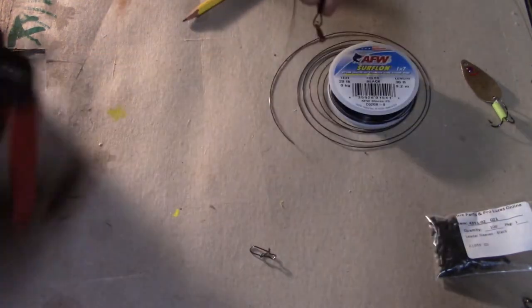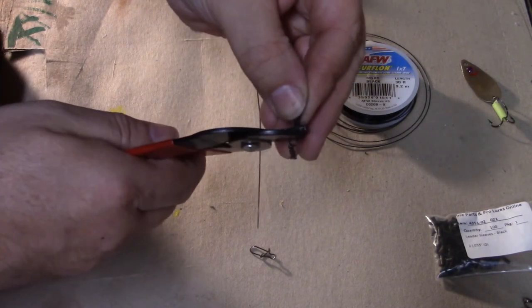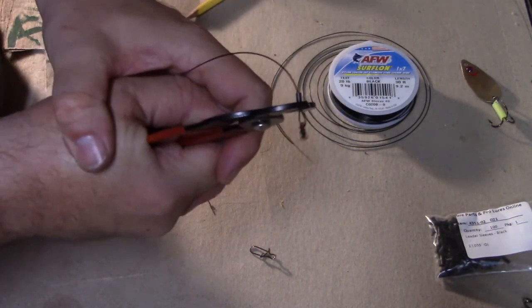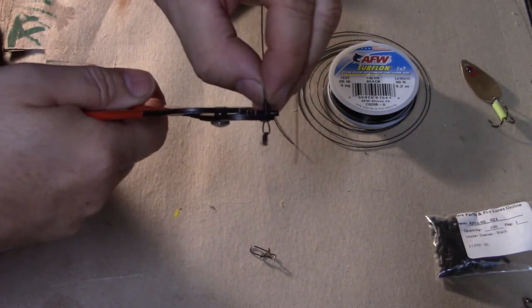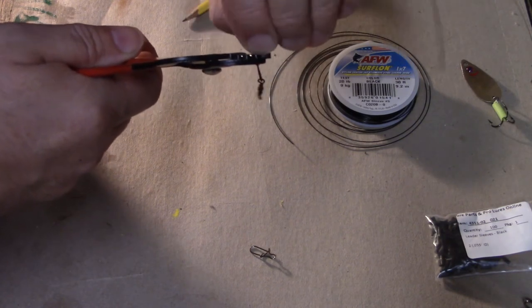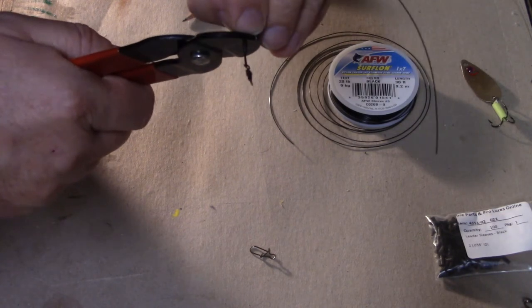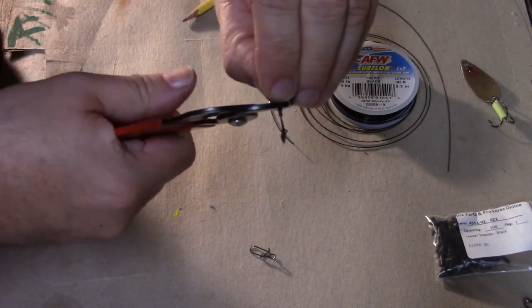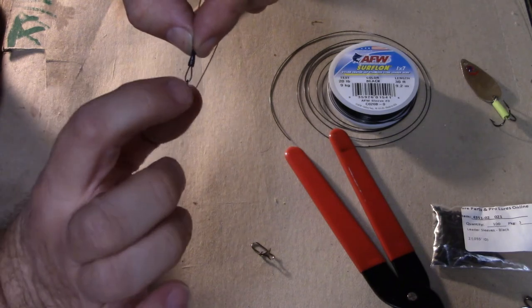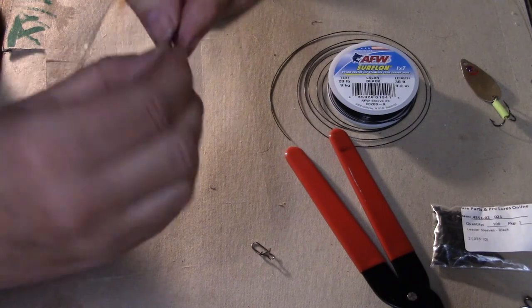And all you're going to do is take your crimping pliers and put them on there, crimp it good and tight. Then rotate your leader halfway, push it to the other end of that sleeve, and crimp it again. So that way you have one crimp going one way and one crimp going the other way, and it makes it good and strong.